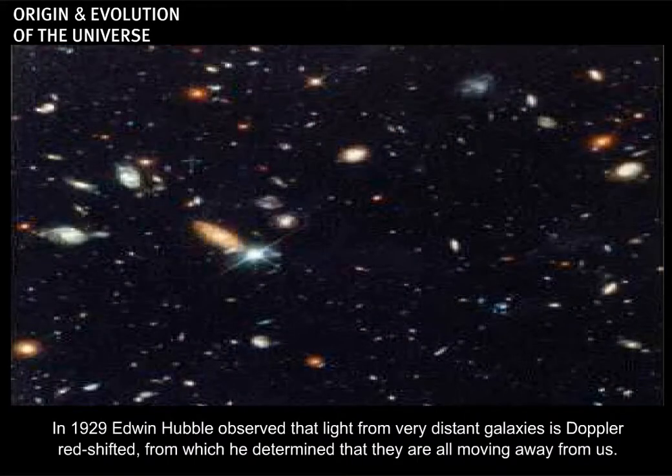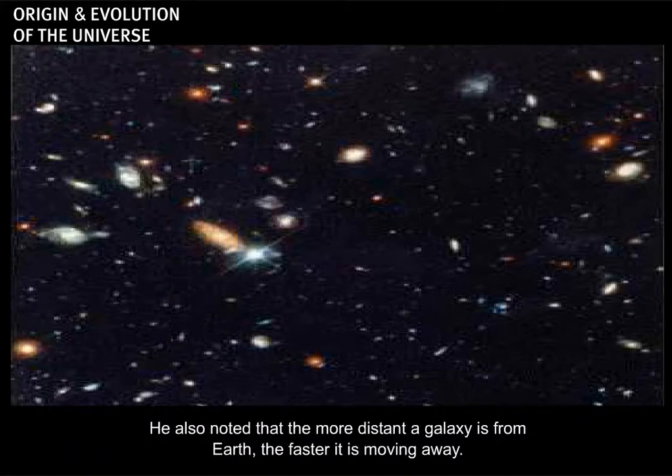In 1929, Edwin Hubble observed that light from very distant galaxies is Doppler red shifted, from which he determined that they are all moving away from us. He also noted that the more distant a galaxy is from Earth, the faster it is moving away.